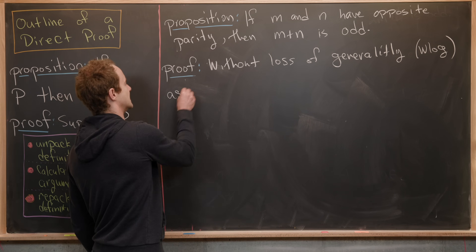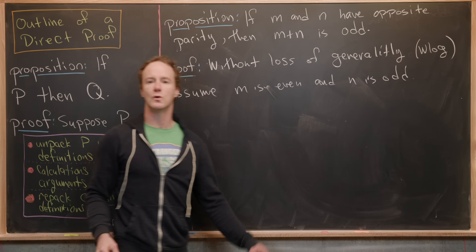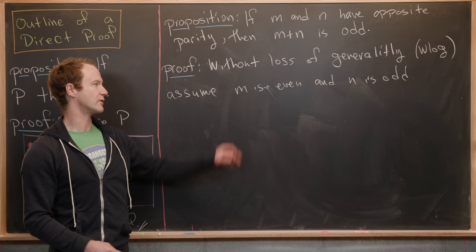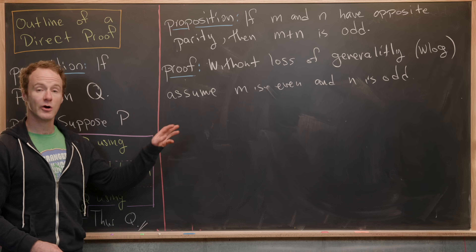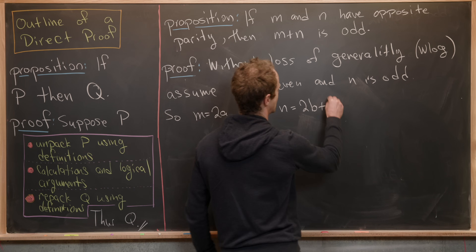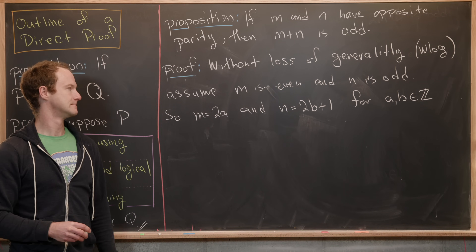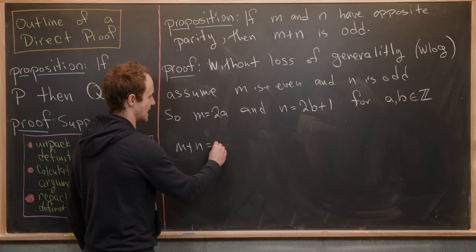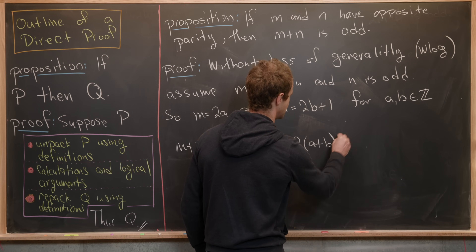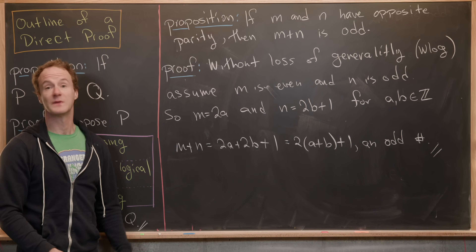Without loss of generality, assume m is even and n is odd. The calculation is exactly the same if we assumed m odd and n even. So m = 2a and n = 2b + 1 for some integers a and b. Then m + n = 2a + 2b + 1 = 2(a + b) + 1, which is clearly odd. That finishes this proof and the video.